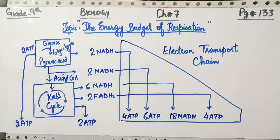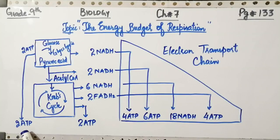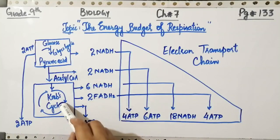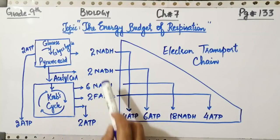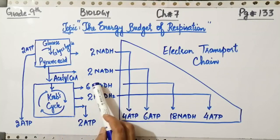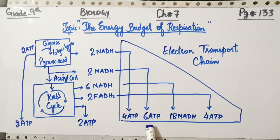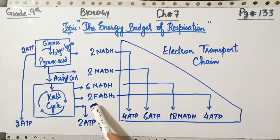These two ATPs from glycolysis are mentioned here. Before entering into the Krebs cycle, acetyl-CoA is formed. Two NADH are produced which in turn produce six ATP. Similarly, six NADH from the Krebs cycle produce 18 ATP, and two FADH2 produce four ATP.